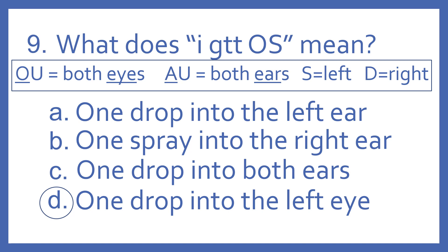And just to review here, OU would mean both eyes. So if it starts with an O, it's for eyes. AU means both ears. So if it starts with an A, it's for ears.